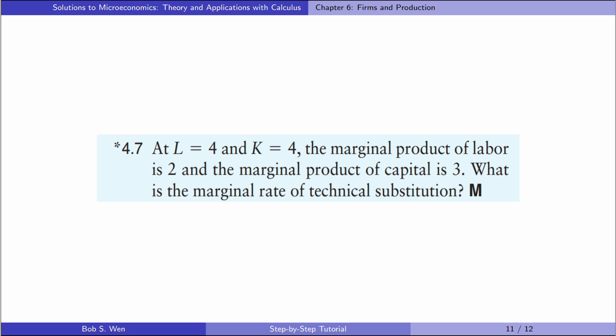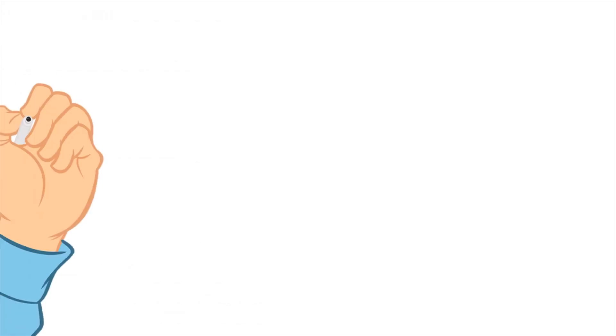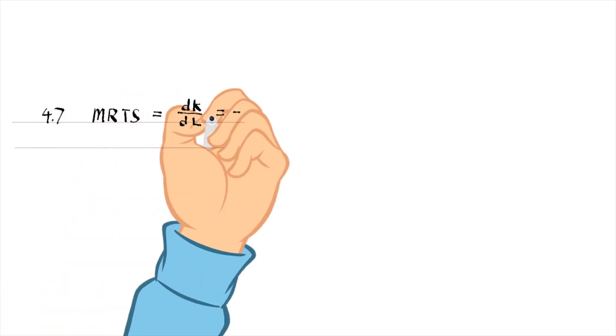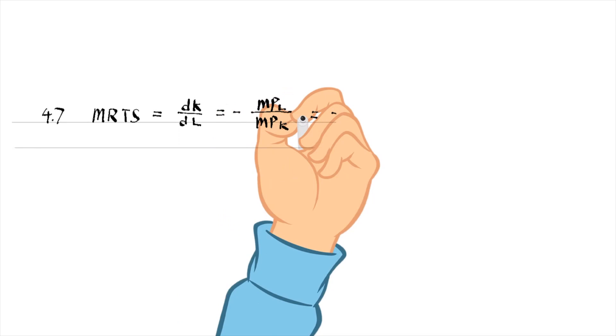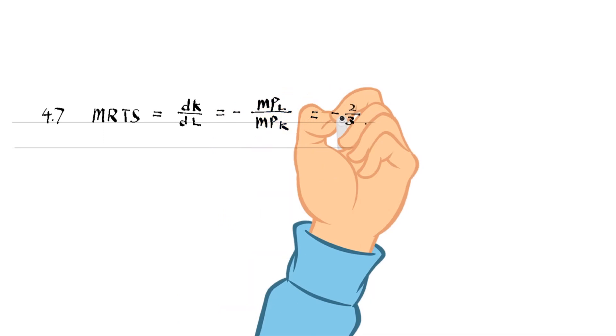Let's find answers to exercise 4.7. At L = 4 and K = 4, the marginal product of labour is 2 and the marginal product of capital is 3. What is the marginal rate of technical substitution? The MRTS is the slope of the isoquant — it is the change in capital divided by the change in labour. It equals the negative of the ratio of the marginal product of labour to the marginal product of capital, which equals −2/3.